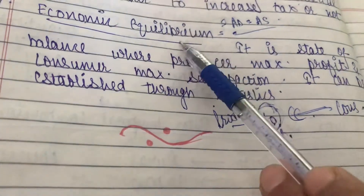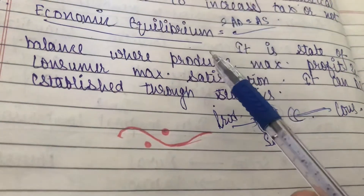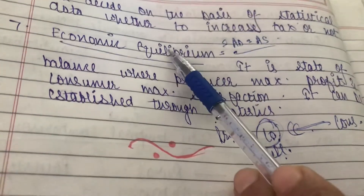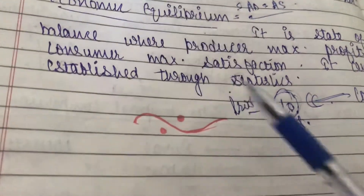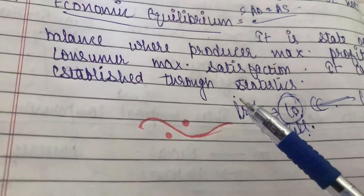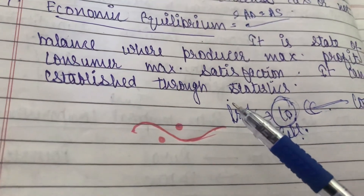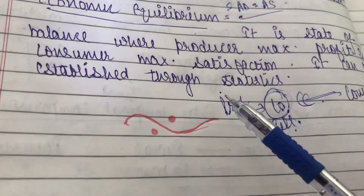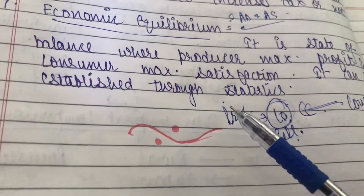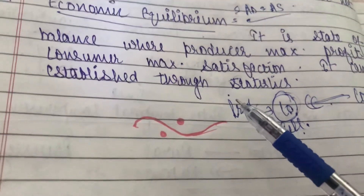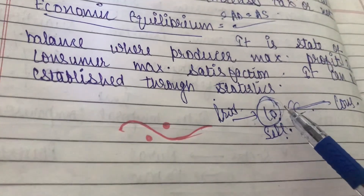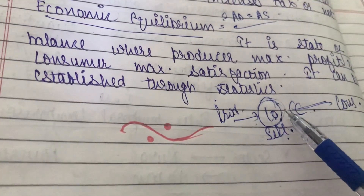So this is the importance of statistics — that we can come to know about economic equilibrium. In economics, until and unless there is no equilibrium, the economy cannot be stable. In our economy, equilibrium gets established on its own. Thank you.